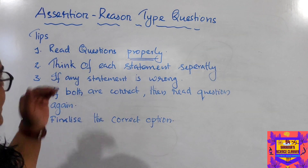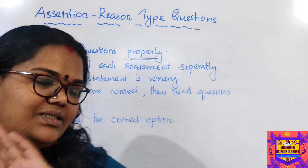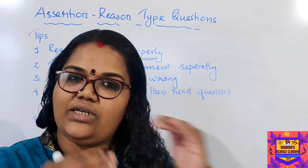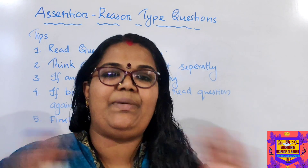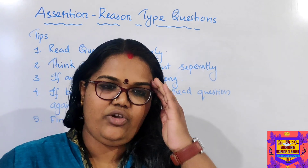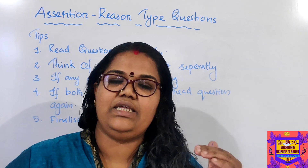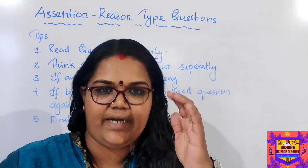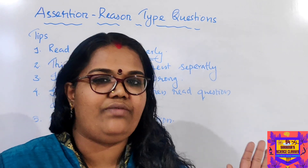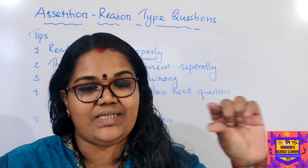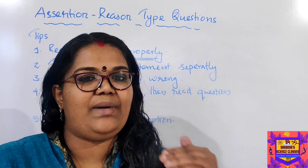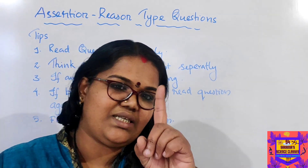The second tip: never think about both statements together at the same time. Separate the questions — think about the assertion independently and think about the reason independently. Take each as a separate, independent statement. Read the assertion on its own and think about what it means. Whether you think in Hindi, English, or your native language, think about each statement independently — that's the only way. Check whether the assertion is correct.